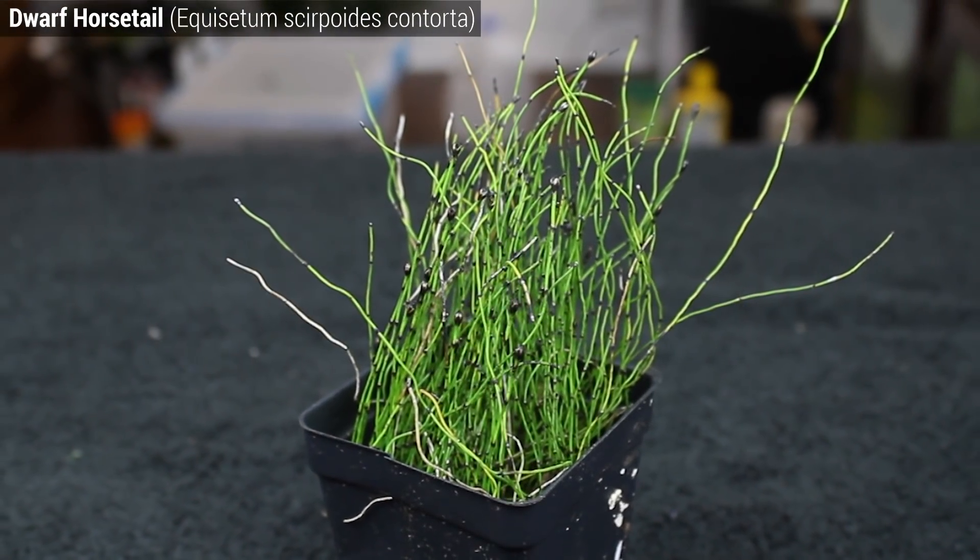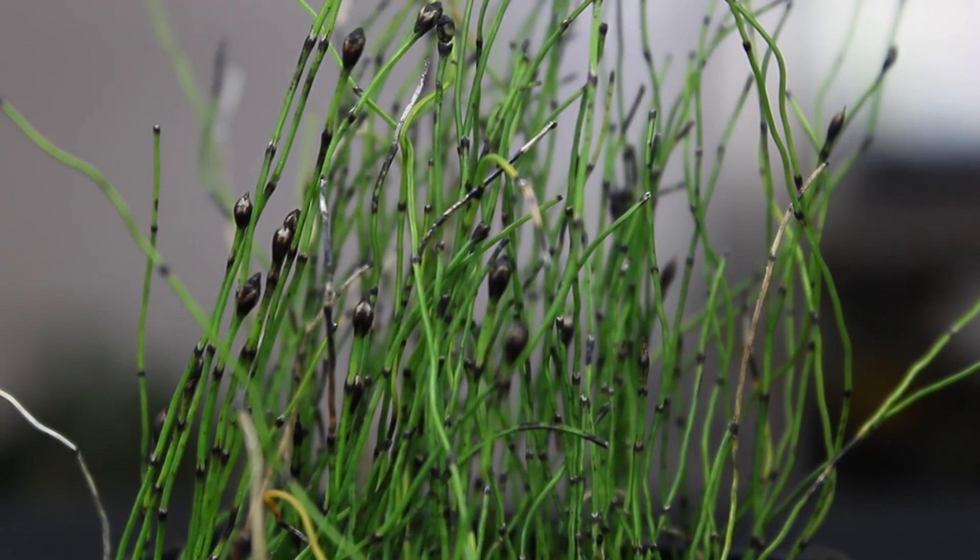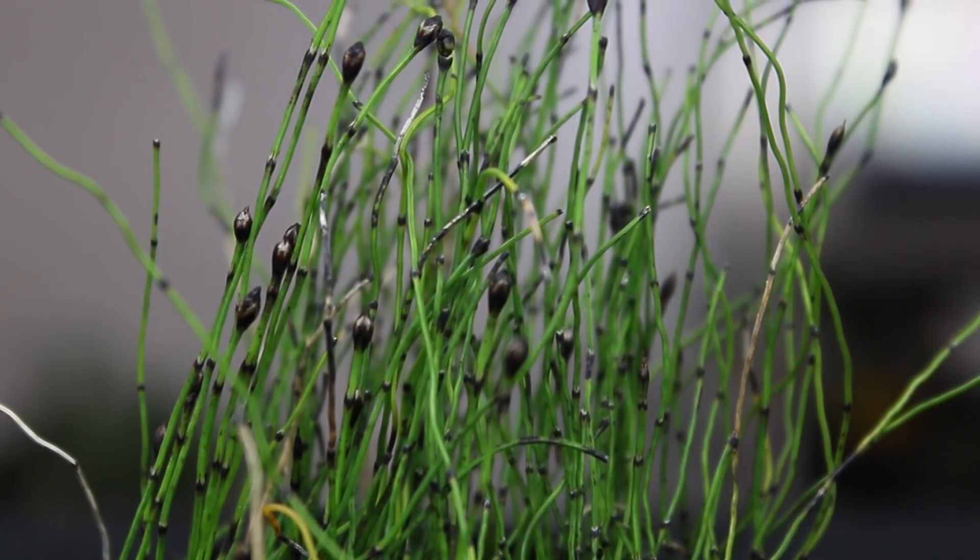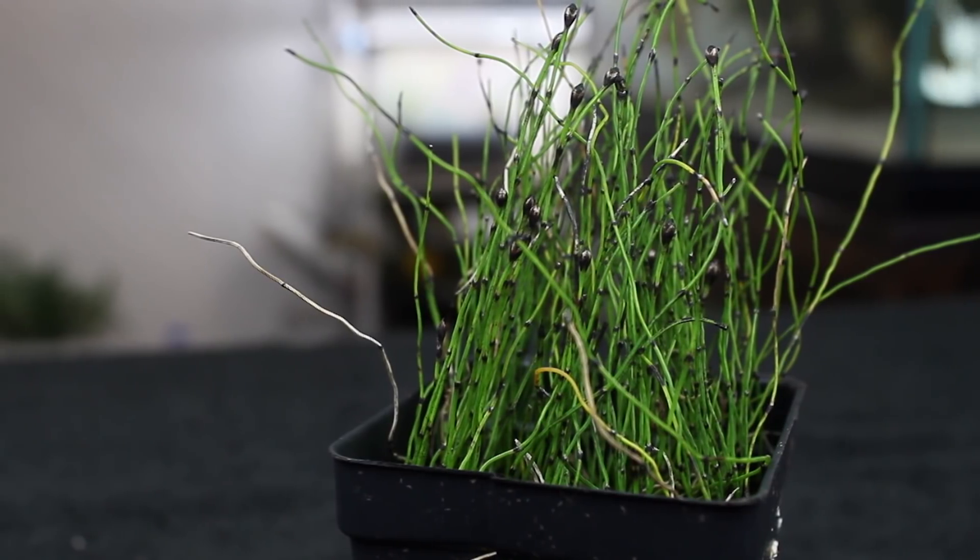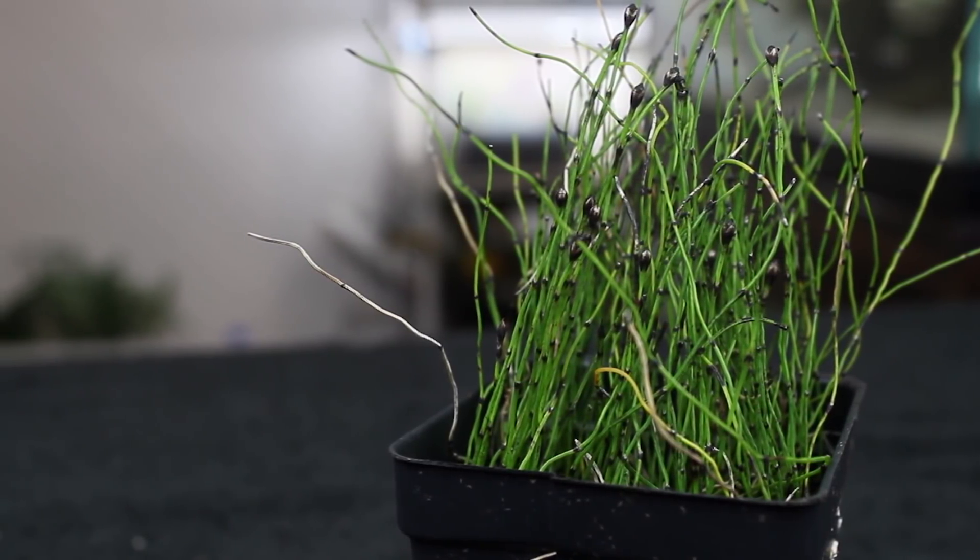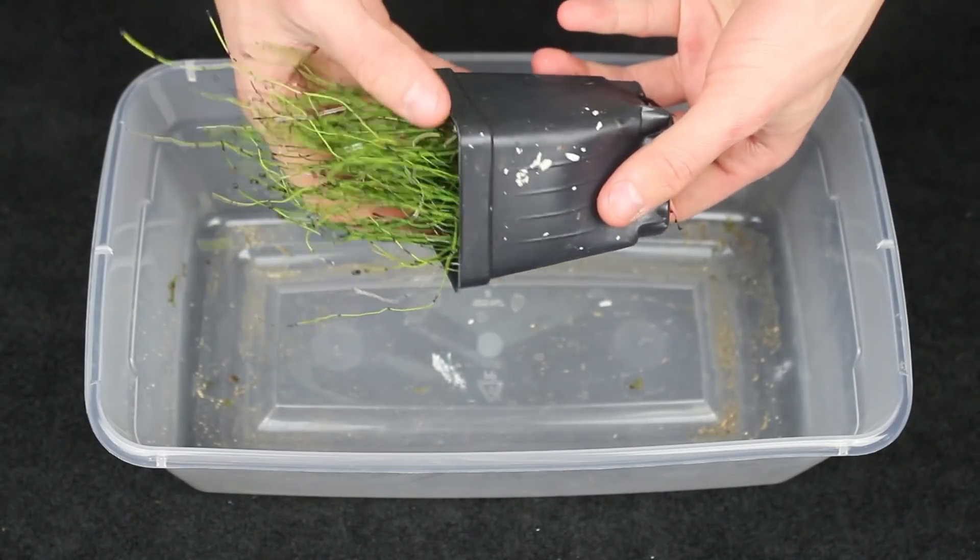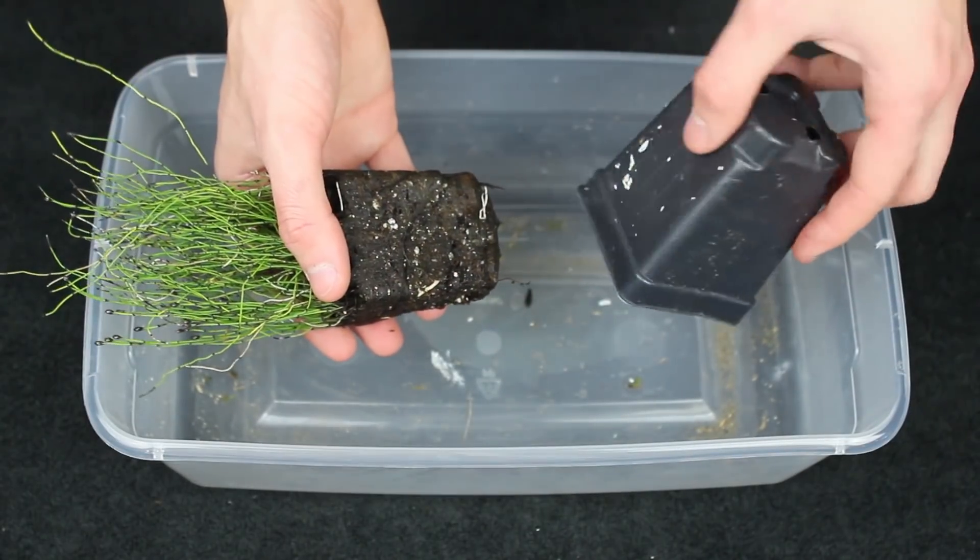Next up I've got a dwarf horsetail. This plant is pretty unique and will be perfect for the aesthetic that I have in mind. It won't get very large and loves to grow near water, so it's also a perfect choice for a riparian type setup. To get the plant ready for use, I gently squeezed the planter so that the dirt would loosen up and the plant could be easily removed.